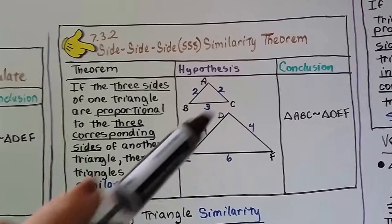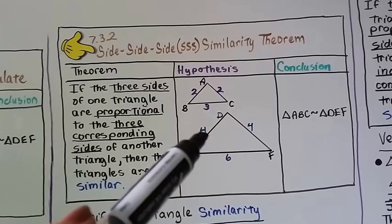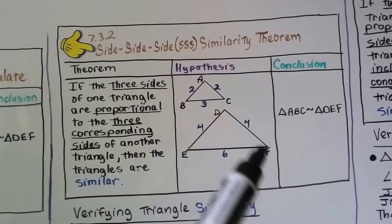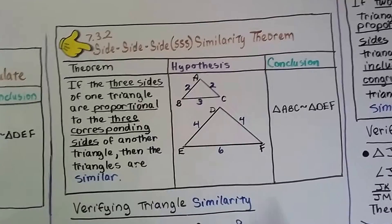AB is a 2. DE corresponds to AB. It's a 4, so this is 2 times that. AC is a 2. DF is a 4. They correspond, and this is also 2 times that.